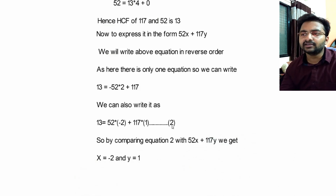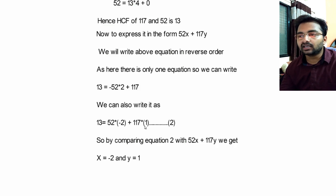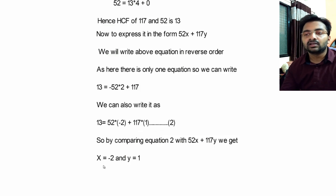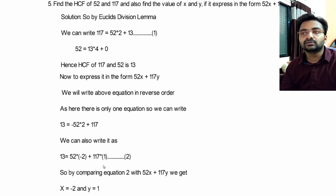Let this be equation number 2. Now if you compare this equation with the standard form 52x + 117y: in place of x we have −2, so x = −2; and in place of y we have 1, so y = 1. Therefore x = −2 and y = 1, by comparing equation number 2 with the standard equation. Hope this was clear — please note this down.